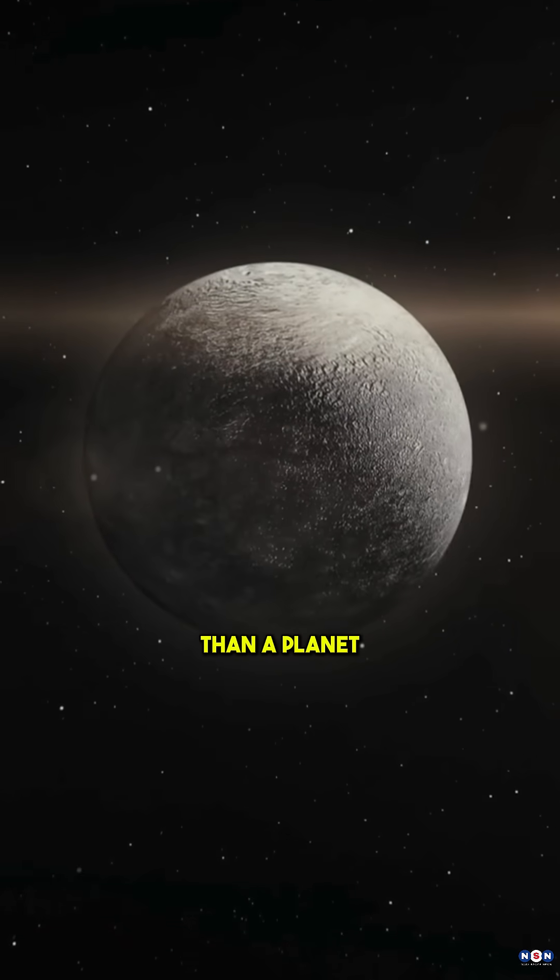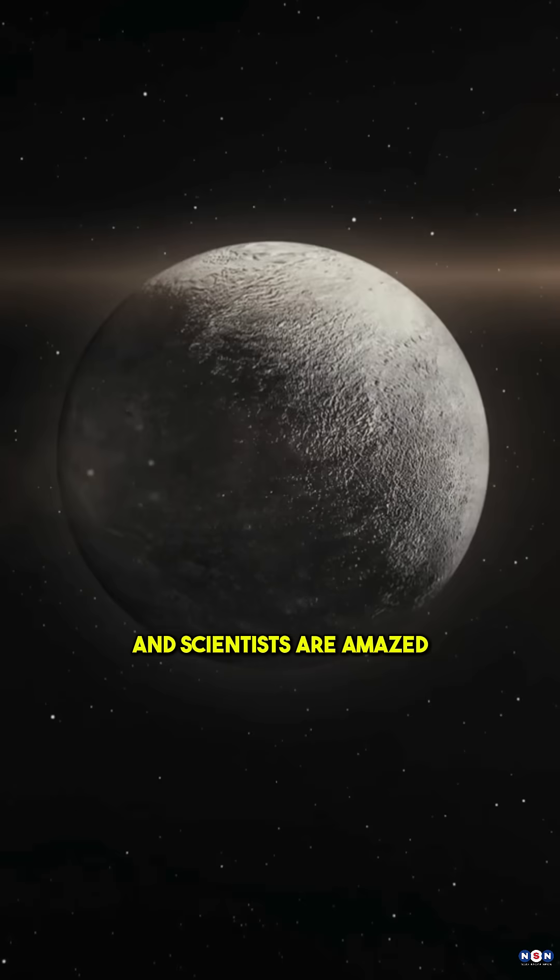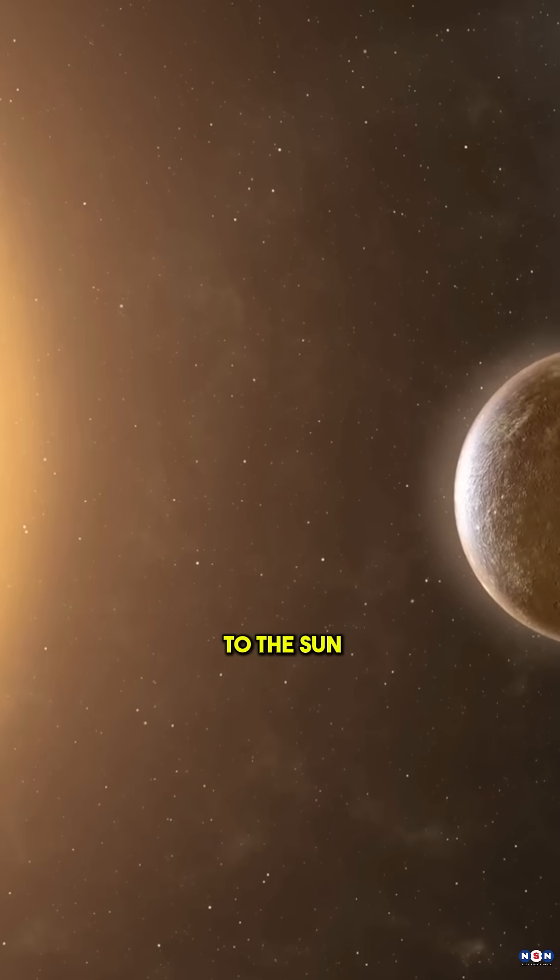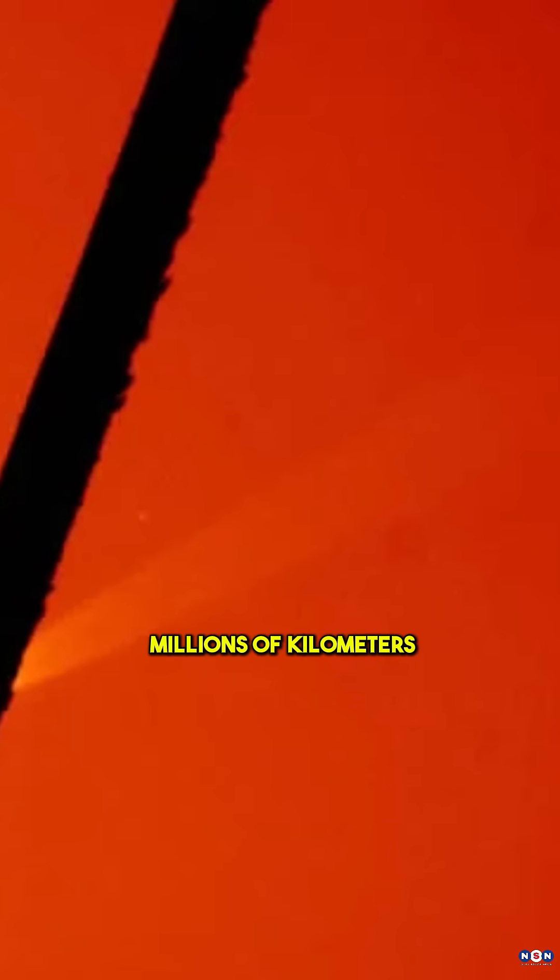Mercury is acting more like a comet than a planet, and scientists are amazed. The smallest planet in our solar system, and the one closest to the sun, is releasing something into space: a massive tail made of sodium atoms that stretches for millions of kilometers behind it.